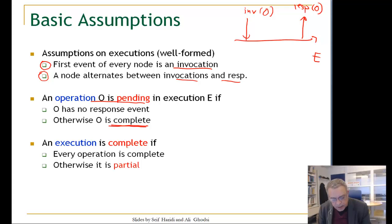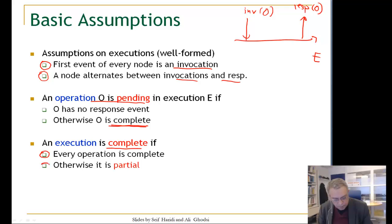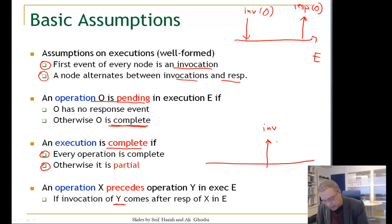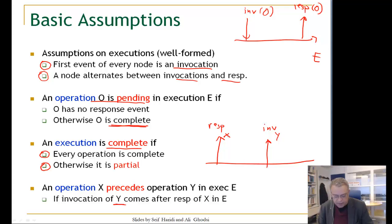An execution is complete if every operation is complete; otherwise we call it a partial execution. Operation X precedes operation Y in an execution if the invocation of Y comes after the response of X. We say that X precedes Y.